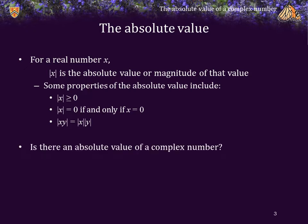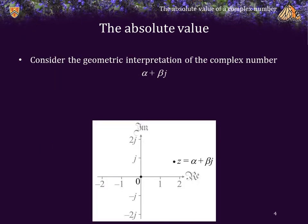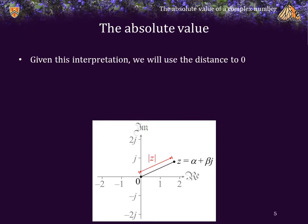Is there an absolute value of a complex number? Let's consider the geometric interpretation of a complex number. Here we see the point z is equal to alpha plus beta j. Given this interpretation, it's natural to use, as the absolute value, the distance of z to 0.